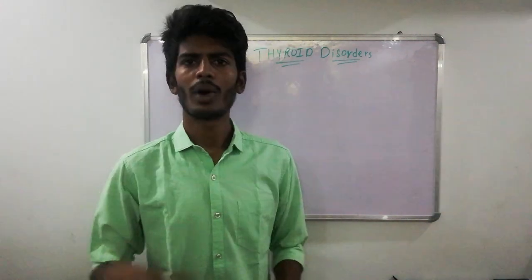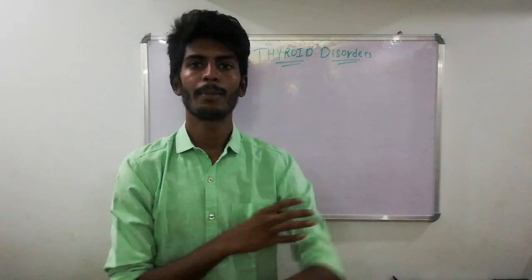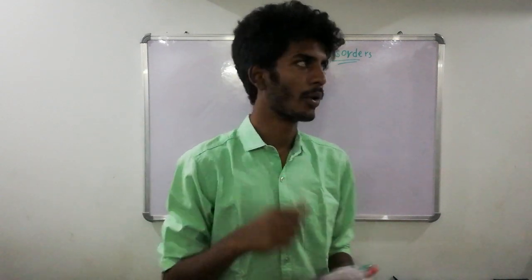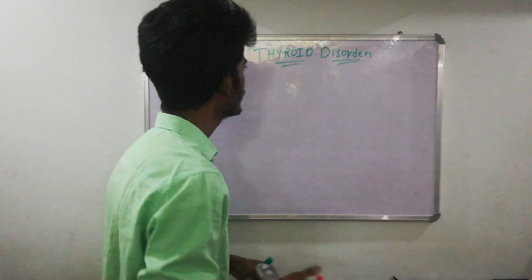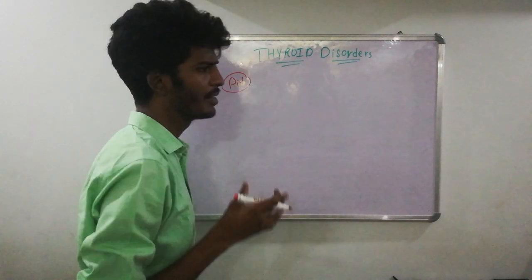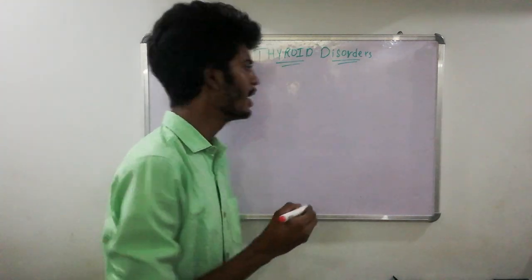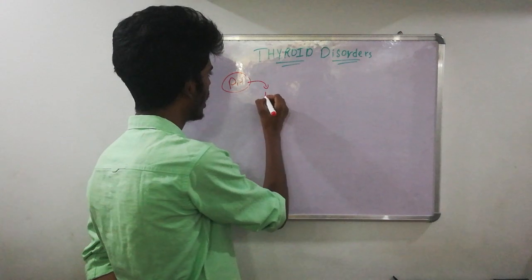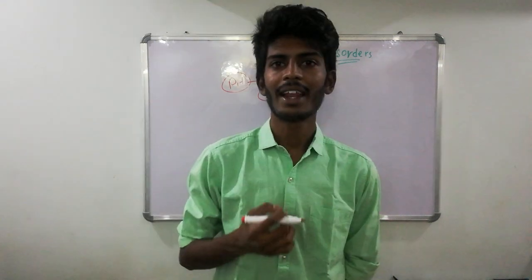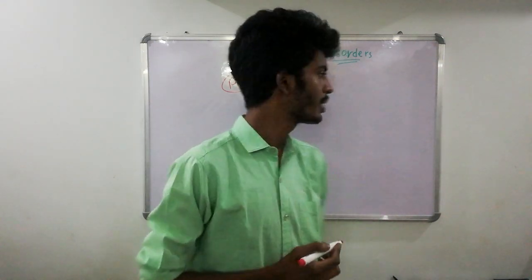In this video, I'd like to talk about thyroid disorders. To understand thyroid disorders, we need to see what type of diseases we can have — diseases associated with hyperthyroidism and hypothyroidism. For that purpose, let's see how our thyroid gland is regulated. There is one gland in our body, the pituitary gland, which is divided into anterior and posterior pituitary. TSH stands for thyroid stimulating hormone.